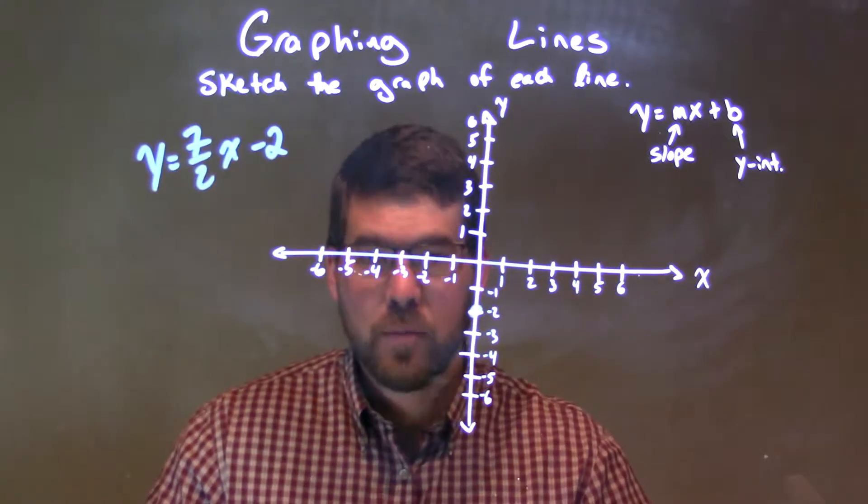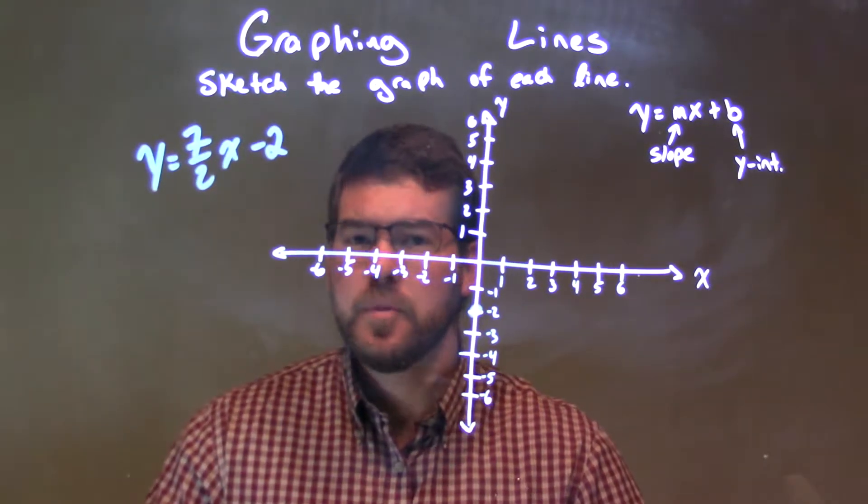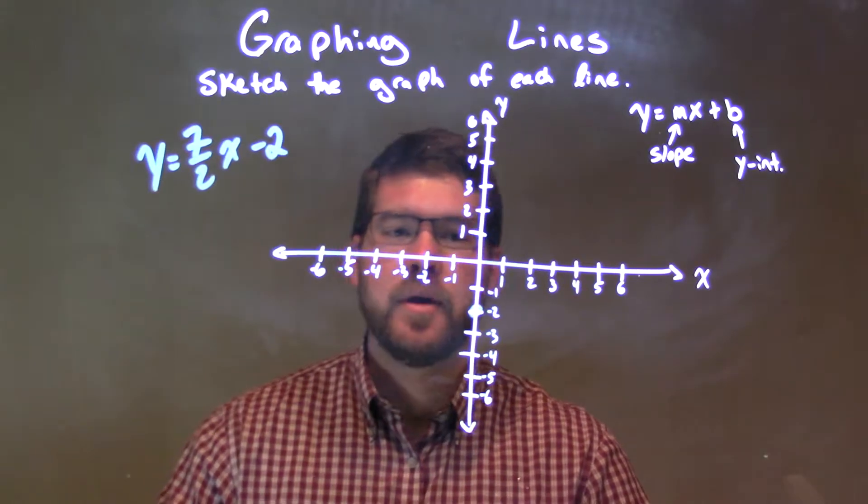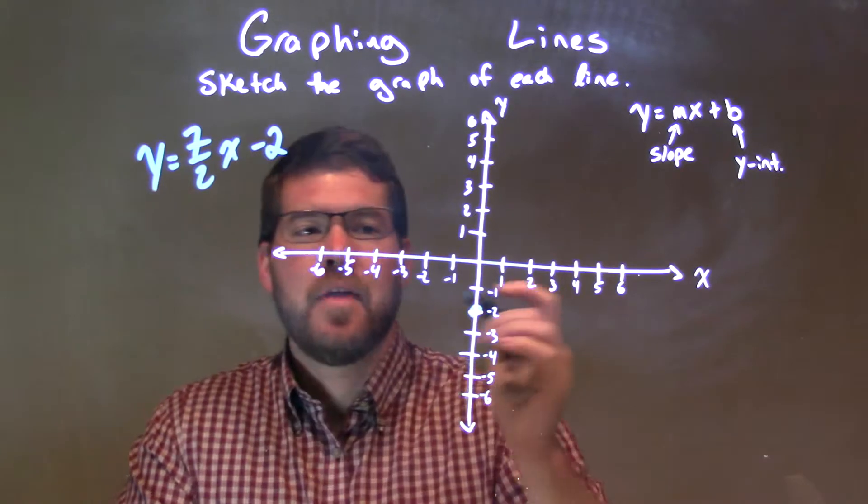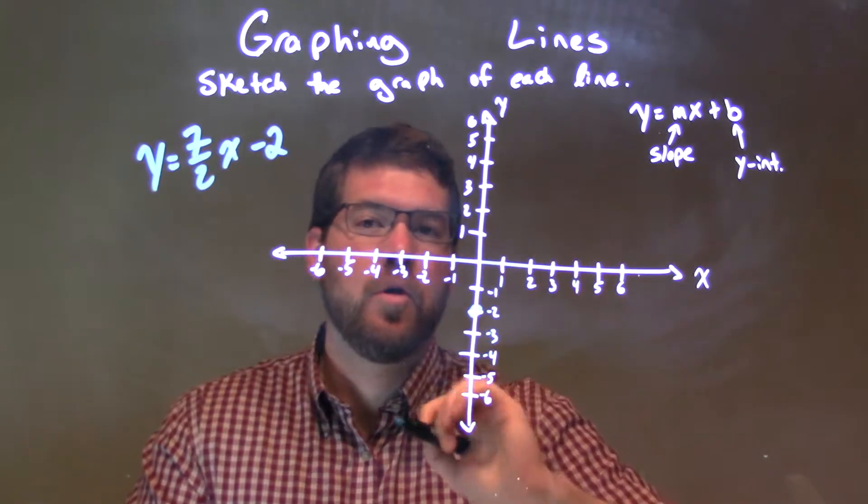And now we have one point. Two points make a line, so we need a second point. Now, they give us a slope, the m-value right here, 7 halves. That means we go up 7 units over 2.